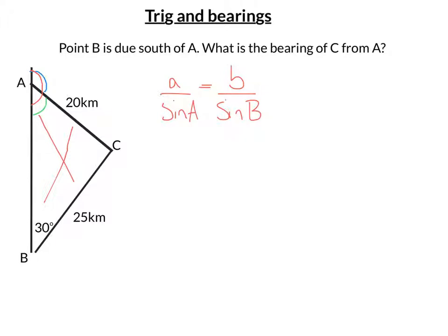Side B over sine of the angle B. So let's put in what we know. We do know what A is. That's the side opposite the angle A, so that is 25, over sine, and we don't know the angle A. That's what we'd like to work out. Now, little b is 20 over sine, and the angle B is 30.